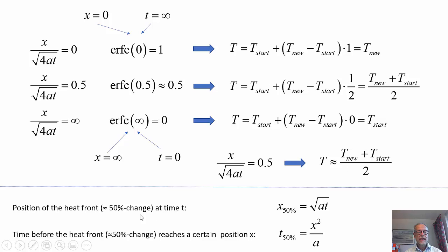So we can say that the position of the heat front, when we have had this half change of the total change, we call it x_50%, is actually equal to square root of a times t. And if we manipulate the formula a bit, we can say at a certain position x, it takes t_50% time equal to x squared divided by a, before we find it had to reach the 50% change.